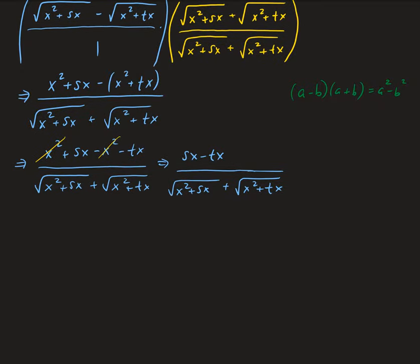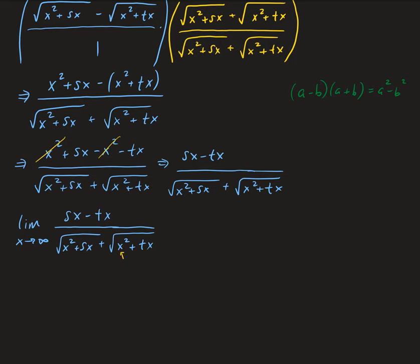So now we can go ahead and take the limit of this as x approaches infinity. Same strategy as the previous video — we want to divide each term by the term with the highest degree. In this case, looking in the denominator, we have x squared, so we're going to divide each of the terms by x squared.